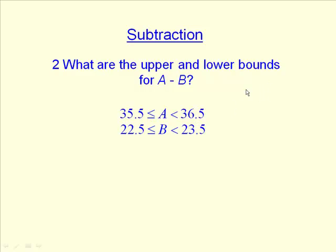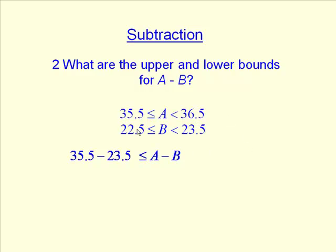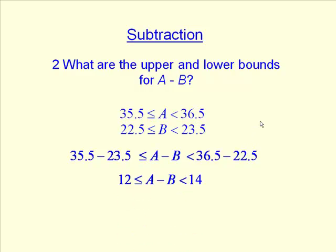What about subtraction? Now this is slightly more tricky. What's the smallest difference there could be between A and B? If we take the smallest value of A and take away the largest possible value of B, that gives us the smallest difference. And for the largest difference, we use the largest value of A and take away the smallest value of B. So the bounds for A minus B are 12 and 14 — 12 being the smallest possible difference, 14 the largest.